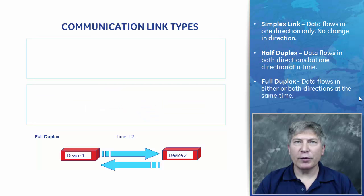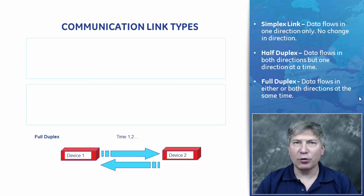Full-duplex refers to the transmission of data in two directions simultaneously. For example, a telephone is a full-duplex device because both parties can talk at once.